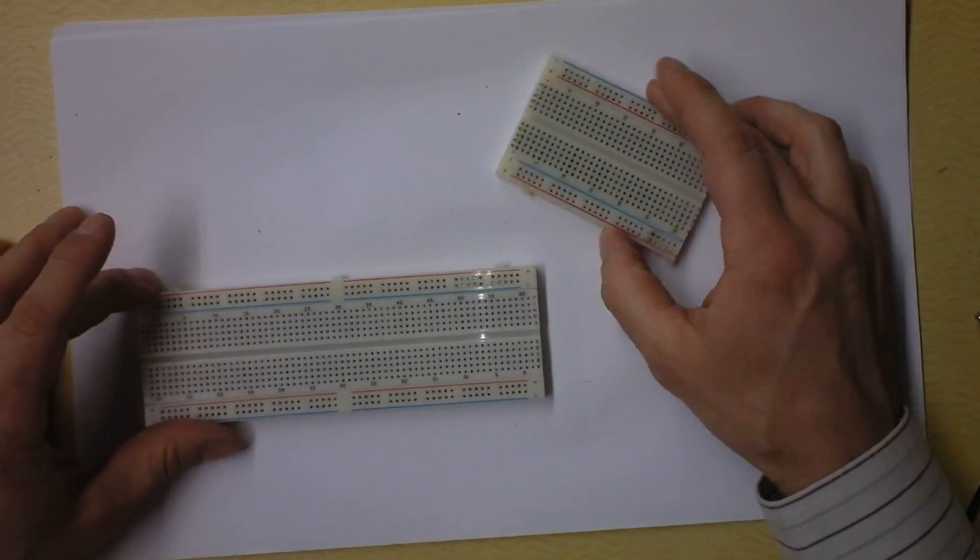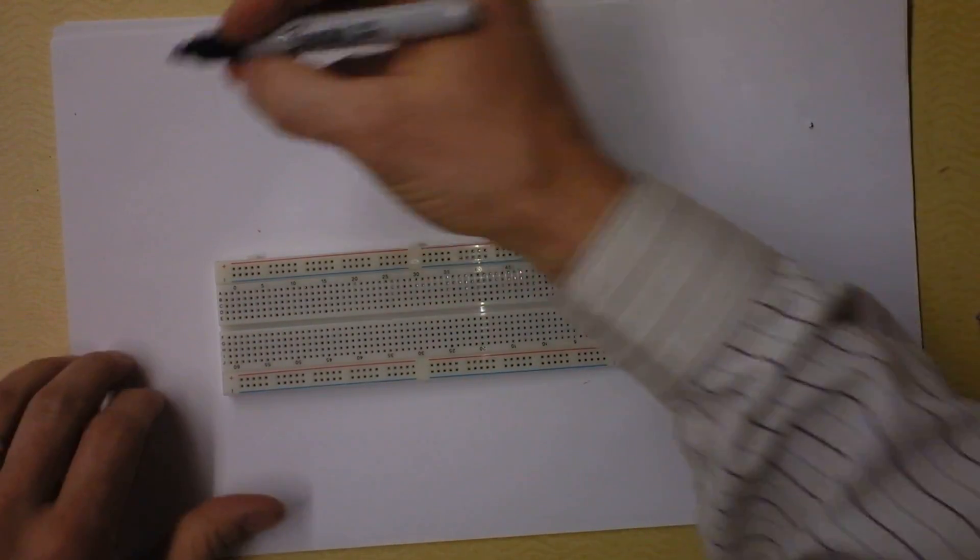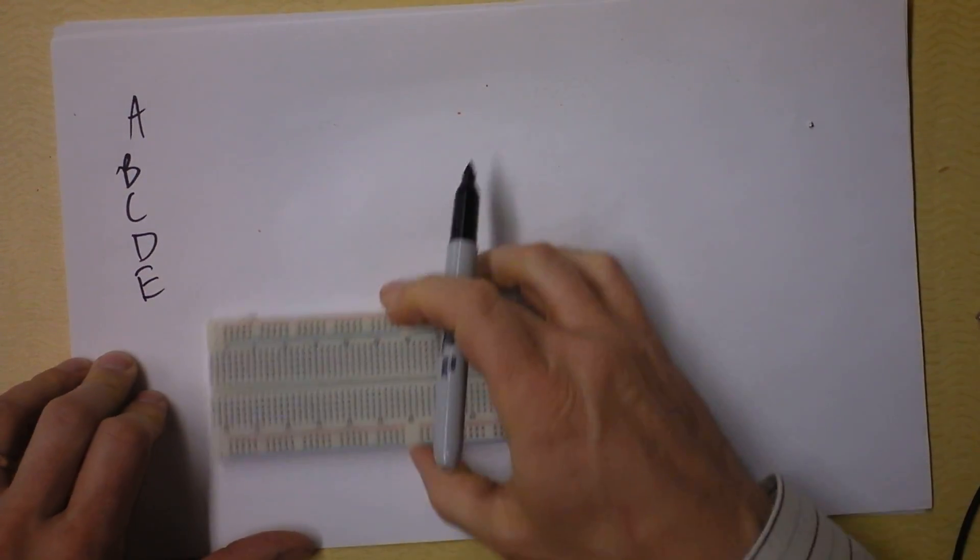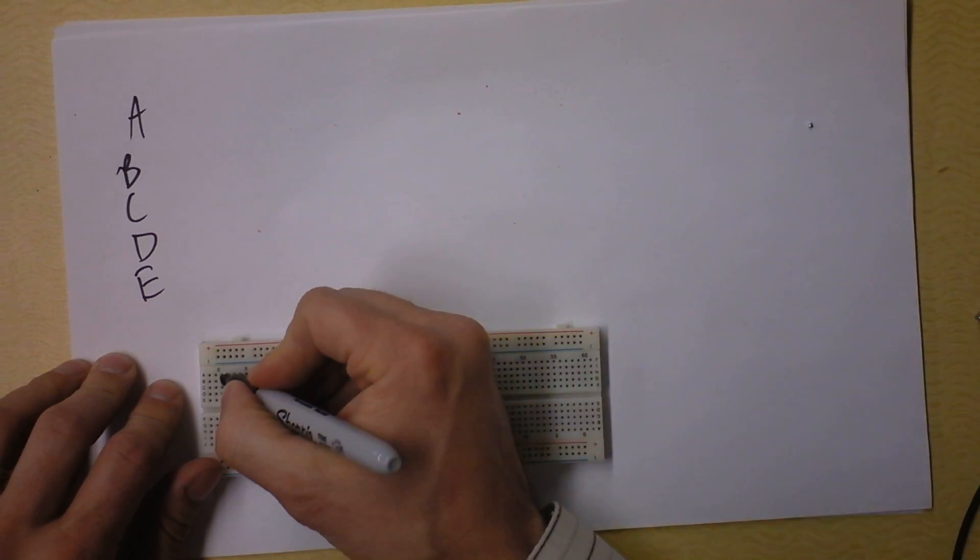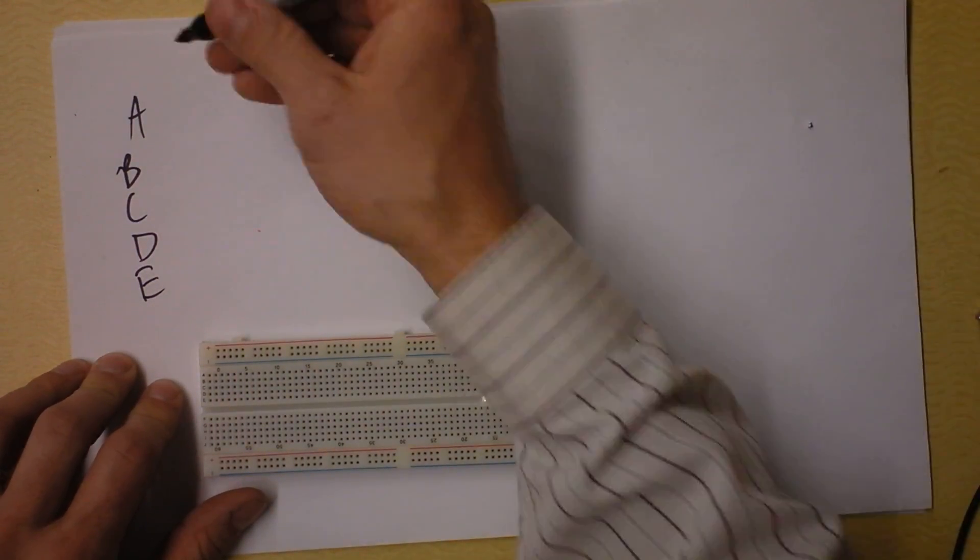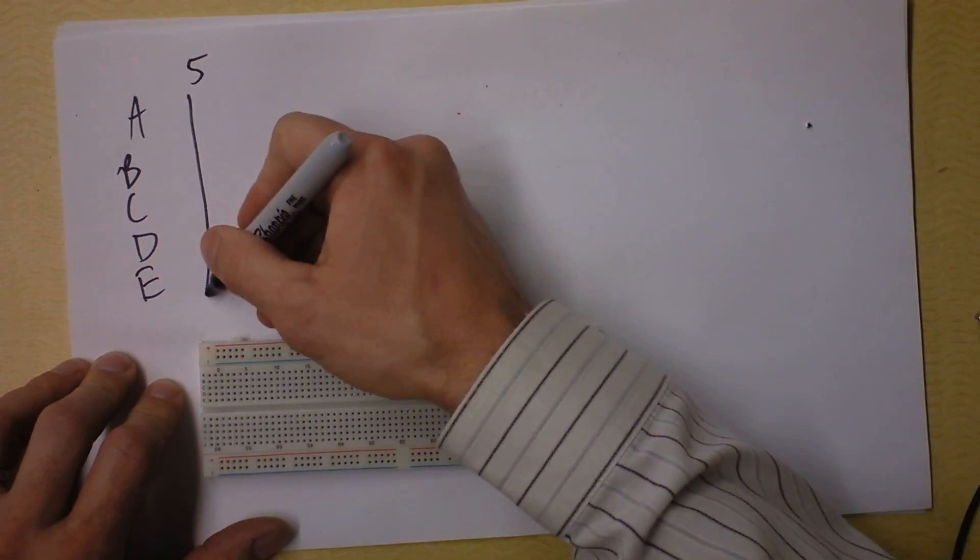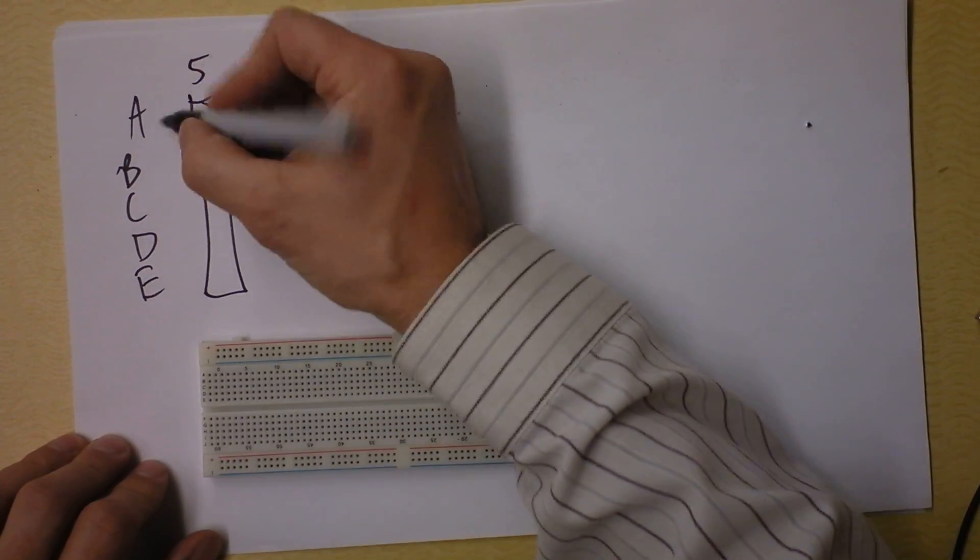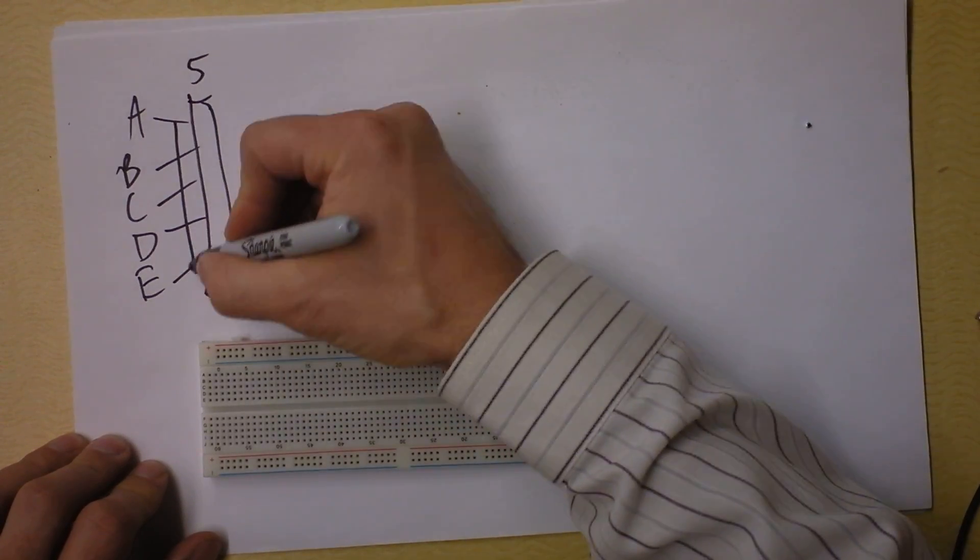Let me show you how to use this solderless breadboard. I'll take this big one right here. First thing you need to know is you got your A, B, C, D, and E. And you got your numbered rows. I don't know why it doesn't start at zero. It starts at like negative one or negative two. But let's take some random row, like row five. This is just a piece of metal in row five that connects A, B, C, and D together. These are all connected together and they're all in common.